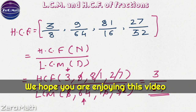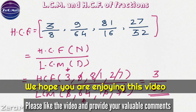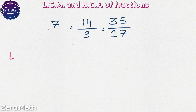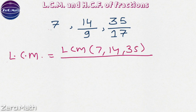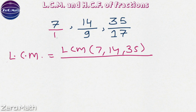Friends, I hope you are enjoying this video. If you are really enjoying it, please like this video and share your feedback in the comment section. Let us figure out the LCM and HCF of the given fractions — you can solve this along with me as a practice session. Let us first figure out the LCM. To find out the LCM, we will take the LCM of the numerators — that is LCM of 7, 14 and 35. Note that the number 7 here means 7 over 1, so this is also a fraction. We have to find out the HCF of the denominators, which are 1, 9 and 17.